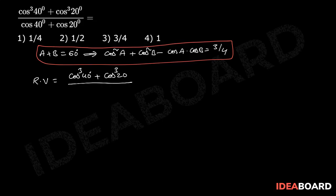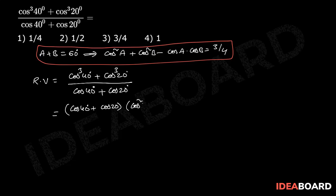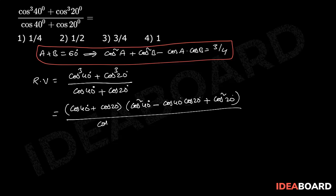The required value is cos cube 40 degrees plus cos cube 20 degrees divided by cos 40 degrees plus cos 20 degrees. For the numerator, we use the A cube plus B cube formula: that is (cos 40 + cos 20) into (cos square 40 minus cos 40 into cos 20 plus cos square 20), divided by (cos 40 degrees plus cos 20 degrees). The common factor cos 40 plus cos 20 cancels.